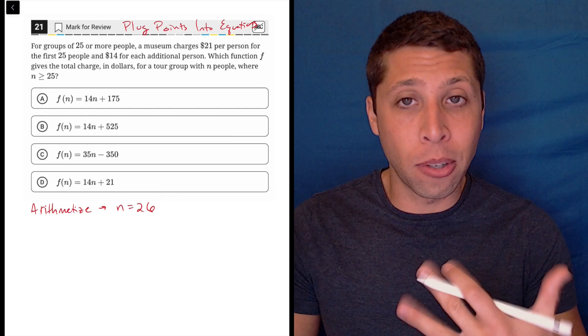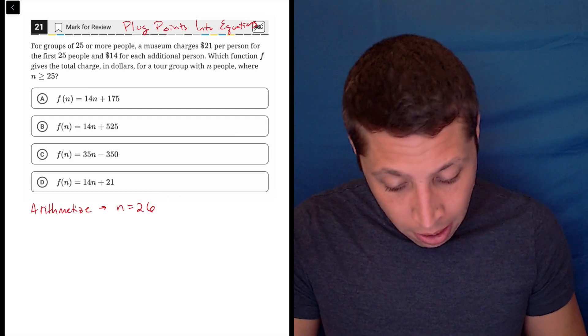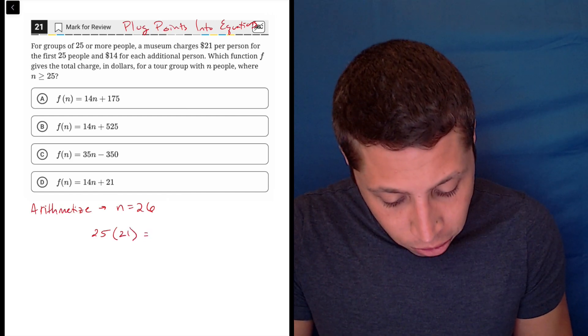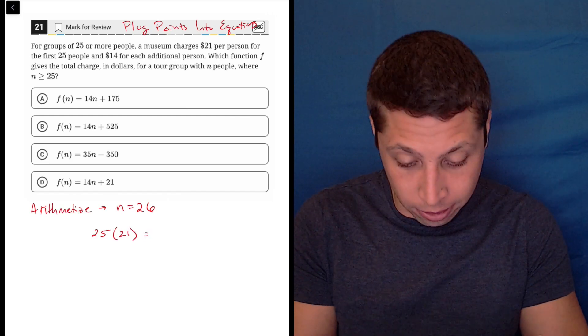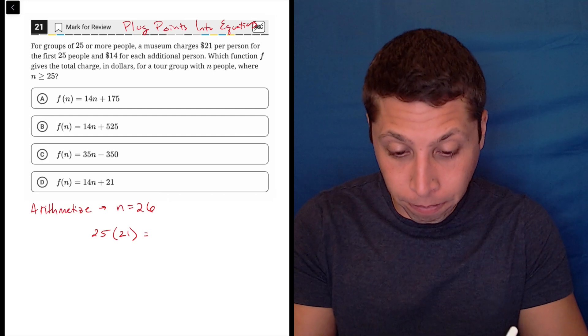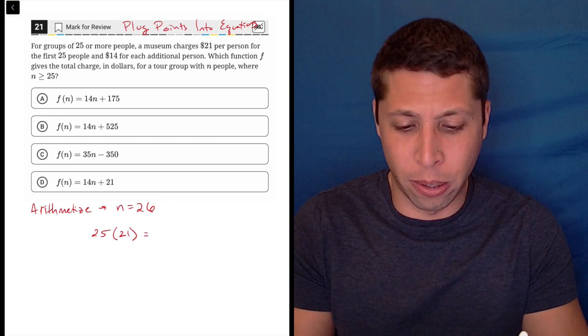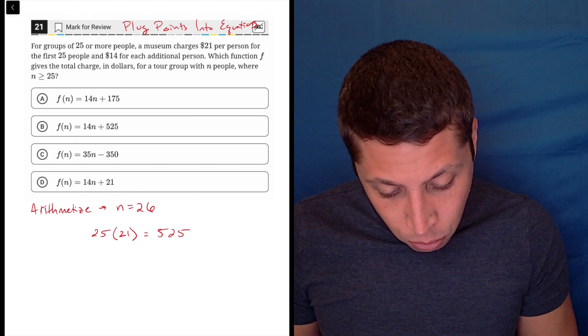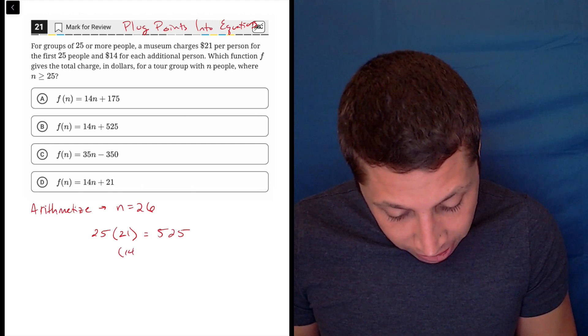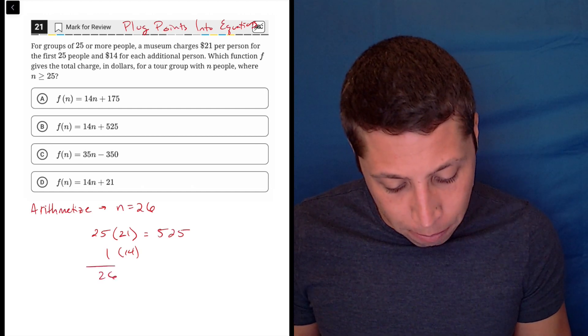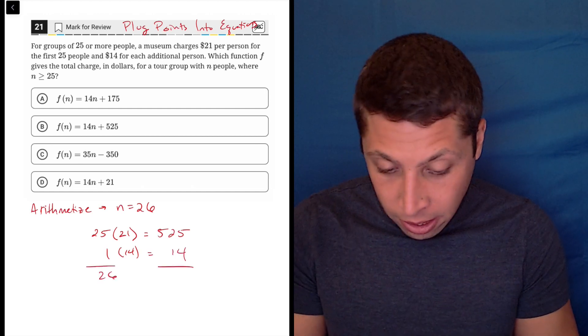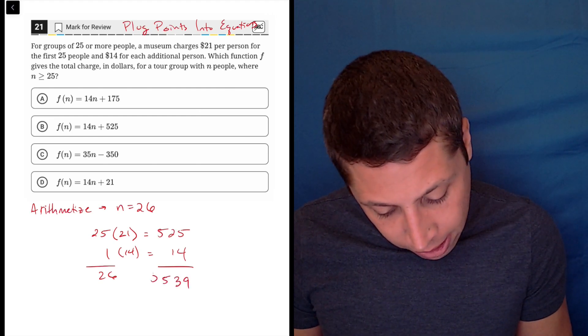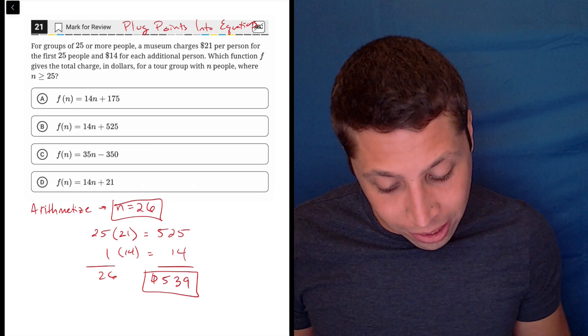Now with the 26, I'm just going to follow the instructions in the question. The first 25 people would be $21 each. So that is, use my calculator, 25 times 21 is $525, and then we have for $14, we have one extra person. That's the 26 people. So that's an extra 14, so plus 14 is $539 for a group of 26.